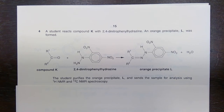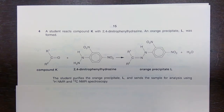A student reacts compound K with 2,4-dinitrophenyl hydrazine. An orange precipitate L was formed. We've got the equation for the reaction there. The student purifies the orange precipitate L and sends the sample for analysis using H1 NMR and C13 NMR spectroscopy.